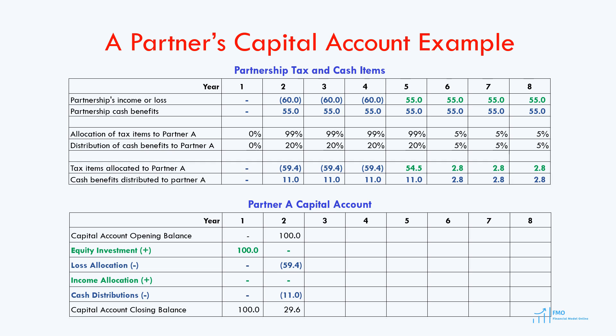Year 3 opening balance is 29.6, with no equity investment, and the loss allocated to partner A is again 59.4. There is no income in year 3, and the cash distributed to partner A is 11. Note that the loss allocated and cash distributed to partner A now exceed the capital account's opening balance, therefore the capital account closing balance will be negative 40.8 — a deficit of 40.8.